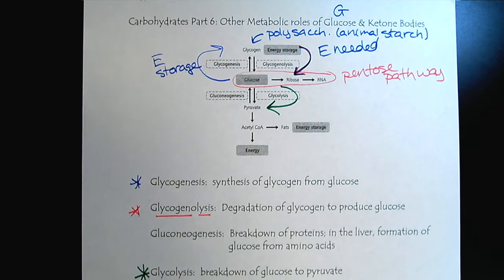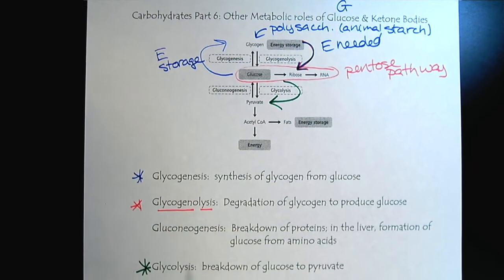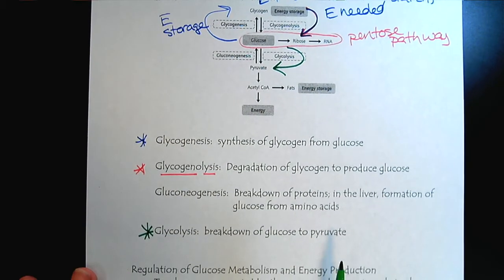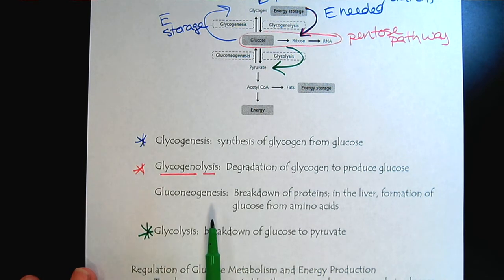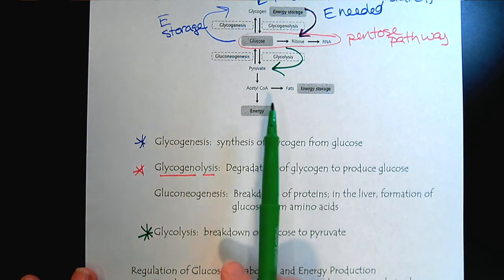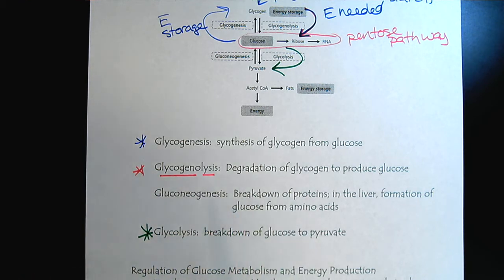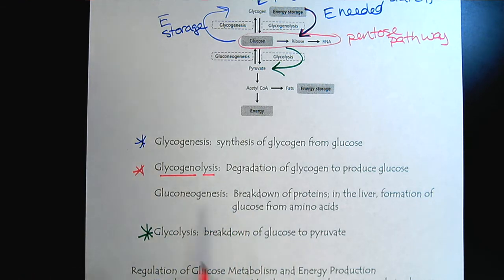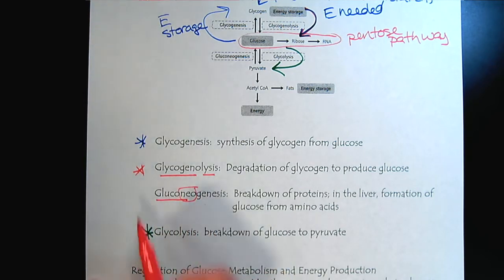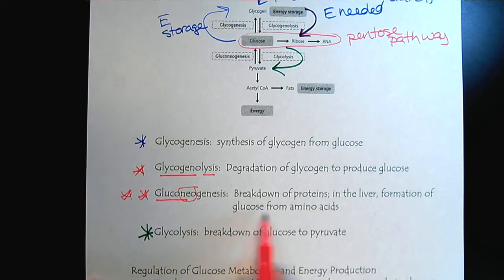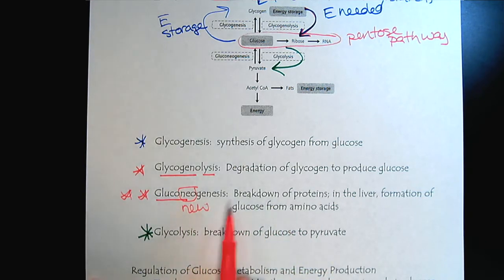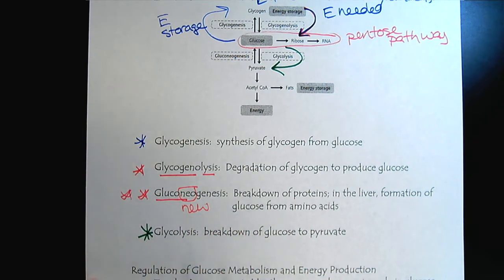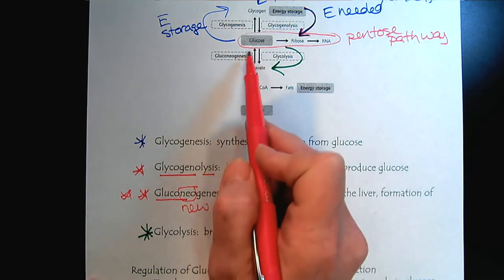One last term: what happens if we're running short on glucose but we need pyruvate or energy? That gives us the term gluconeogenesis — where we get the breakdown of proteins in the liver to form glucose from amino acids. This is getting glucose from non-carbohydrate sources, and that would be gluconeogenesis right here.